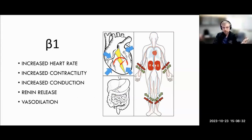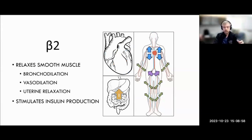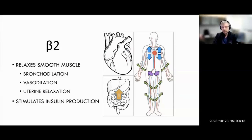Beta-1 receptors are your fight-or-flight response. It increases your heart rate, the contractility, and the conduction through the myocardium. It stimulates renin release, so it increases blood pressure through that mechanism as well, and it encourages some amount of vasodilation to improve cardiac output — so as you're running away from a saber-toothed tiger, you're able to meet your body's metabolic demands. Beta-2 receptors are those you might be familiar with from asthma treatments. It relaxes smooth muscles such as in bronchioles, causes some vasodilation, uterine relaxation, and stimulates some insulin production — though that's a modest effect clinically.